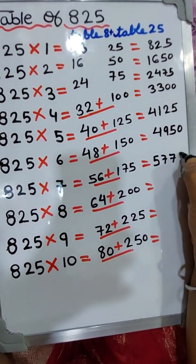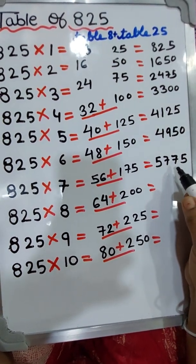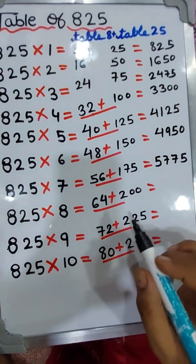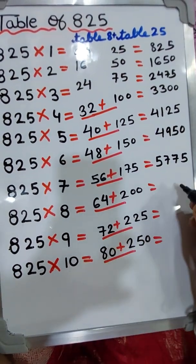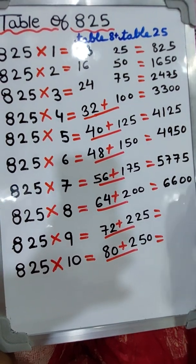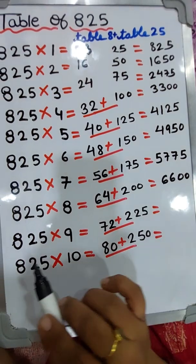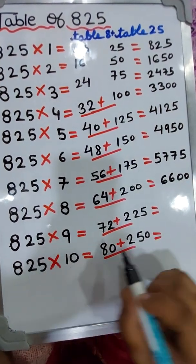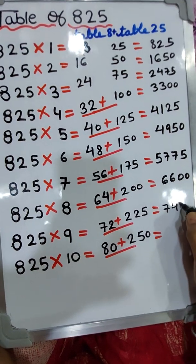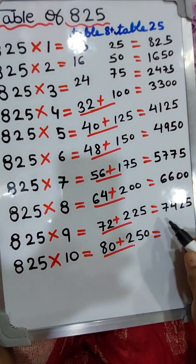825 sevens are five thousand seven hundred and seventy-five. 825 eights are six thousand six hundred. 825 nines are seven thousand four hundred and twenty-five.